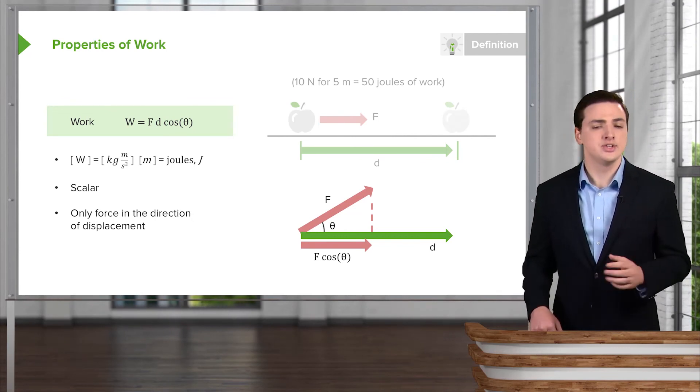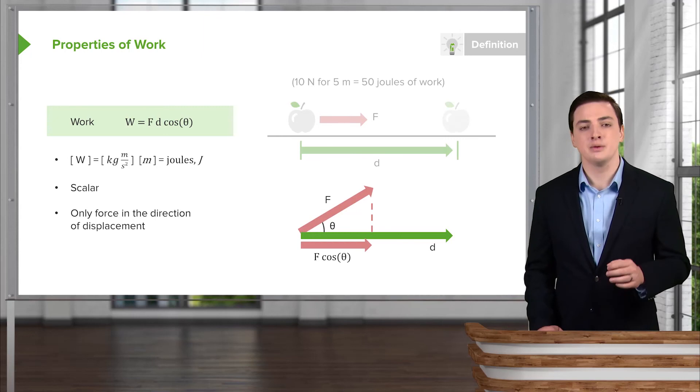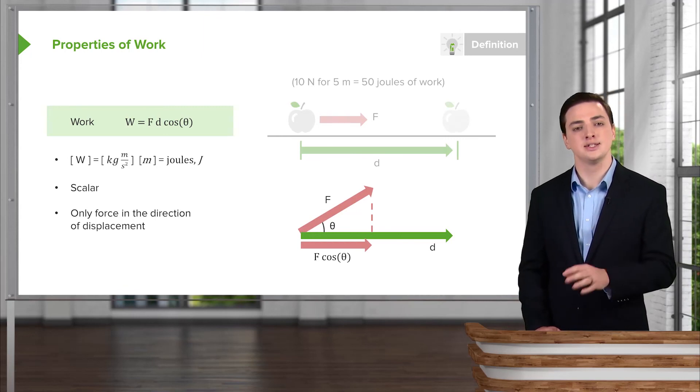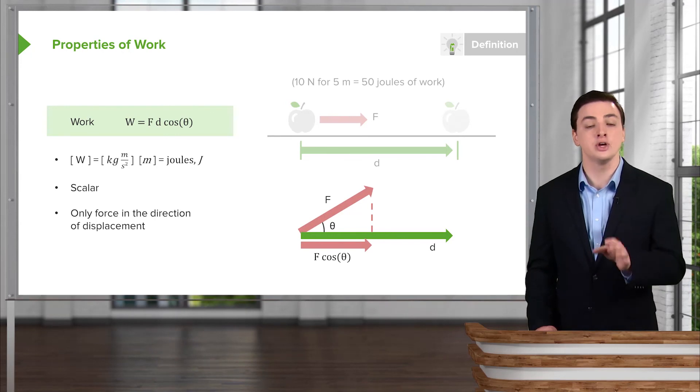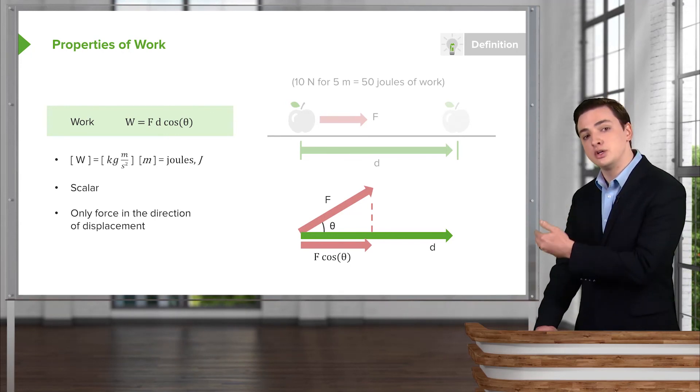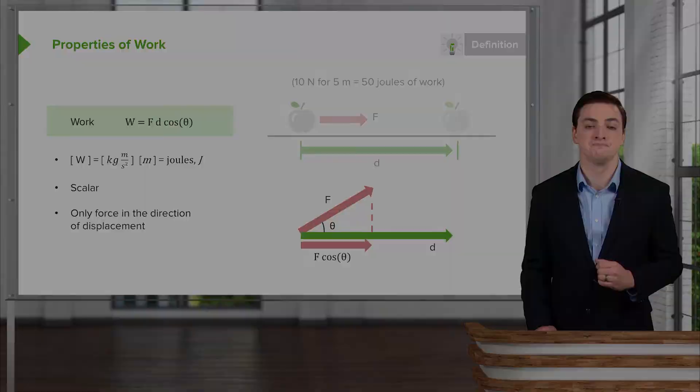And so really this is just a long fancy way of saying that when you're considering a force and a distance, you only want the force in the direction of motion. And to do that you'll find the cosine of the angle between your direction of motion and the force.